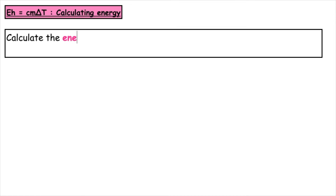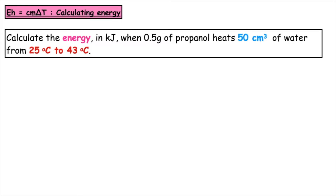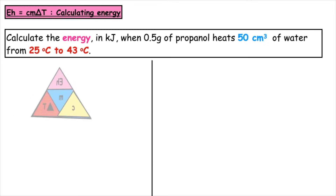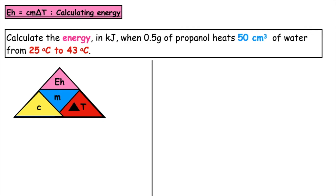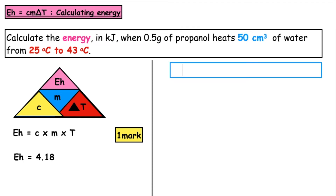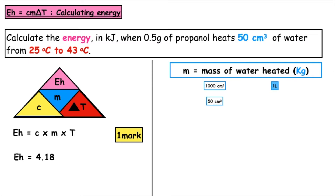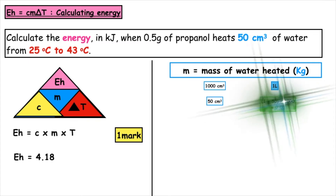The second example asks us to calculate the energy in kilojoules when 0.5 grams of propanol heats 50 centimetres cubed of water from 25 degrees to 43 degrees. First, we write down the formula: Eh is equal to CmΔT. We substitute in the constant 4.18 — that gets us our first mark. We then look at the mass of water; it's given as 50 centimetres cubed, so we convert that to 0.05 litres.